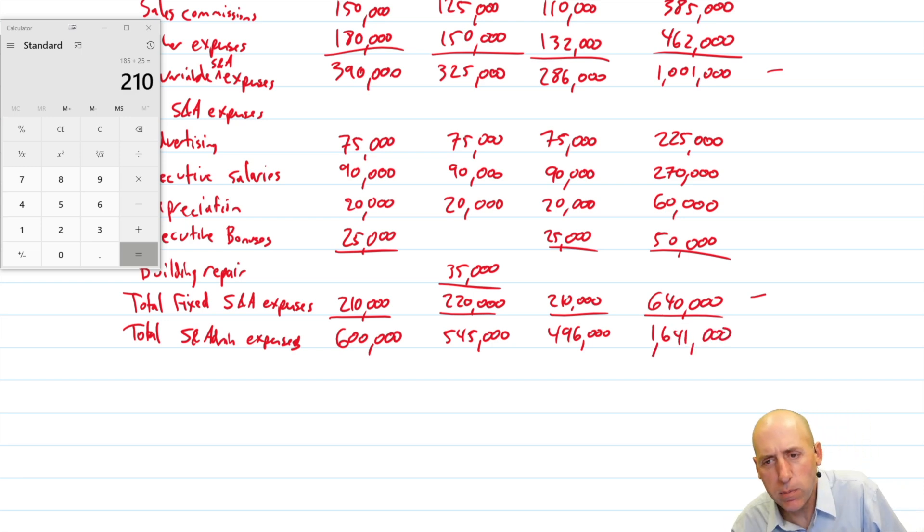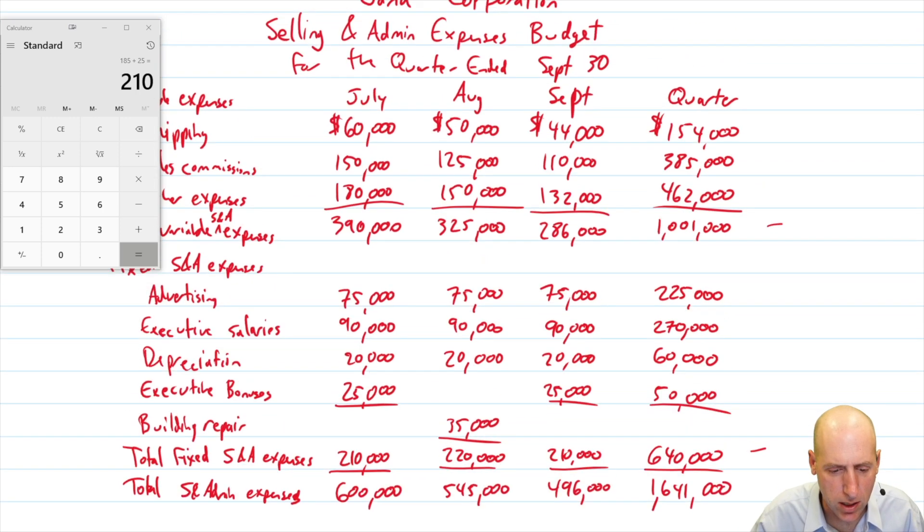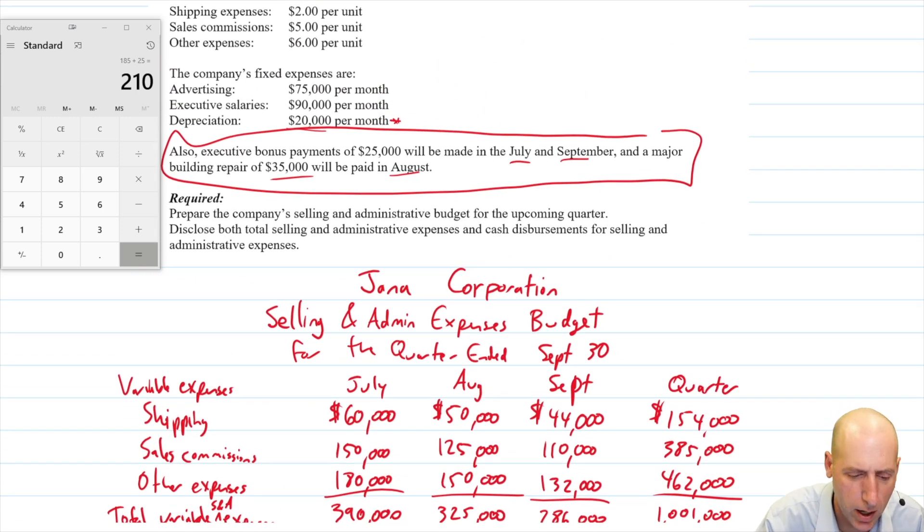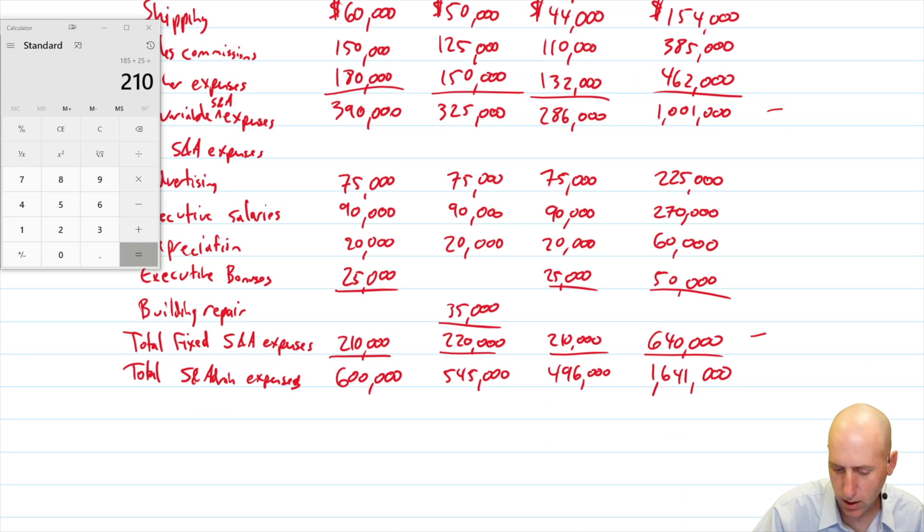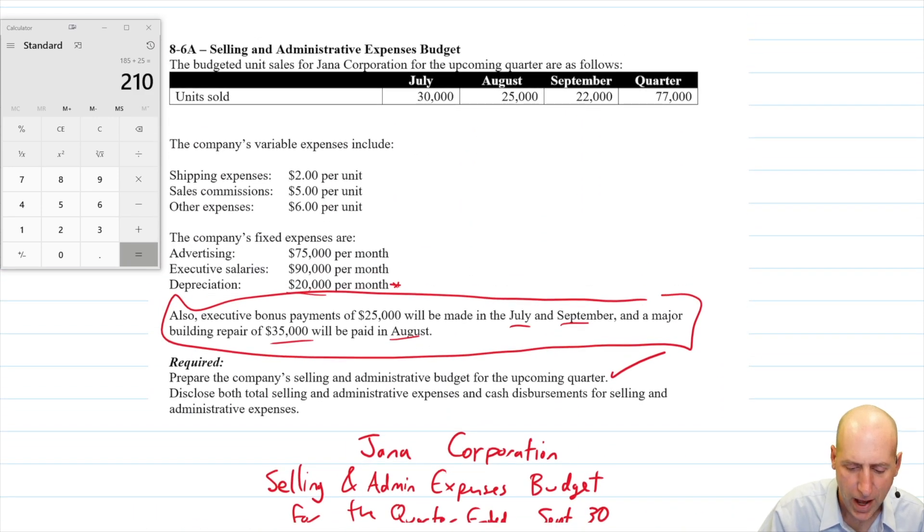Okay. So, there we'd be done. That's a selling and admin budget except for this. It says required. Prepare the company's selling and admin budget for the upcoming quarter. Yes. Done. Disclose both total selling and admin expenses. That's done. Total selling and admin expenses right there. 1641. And cash disbursements for selling and admin. So, what we said at the start was depreciation is kind of special. It needs to come back out. Right?